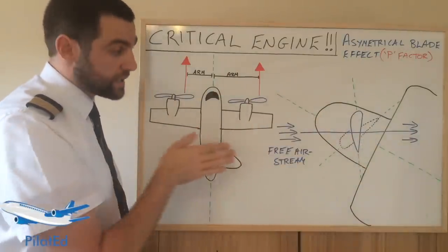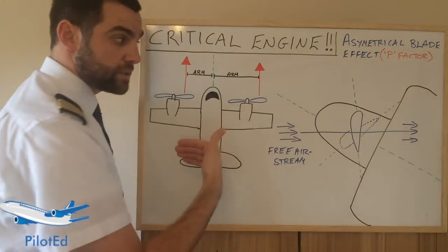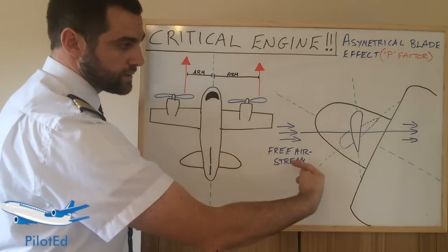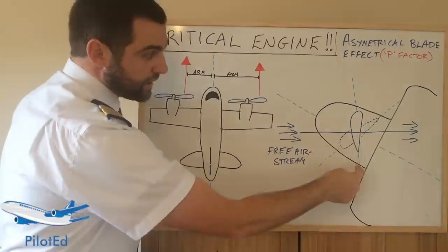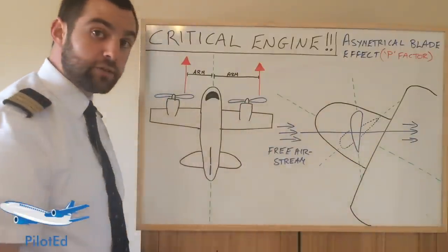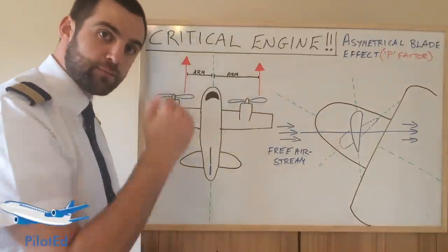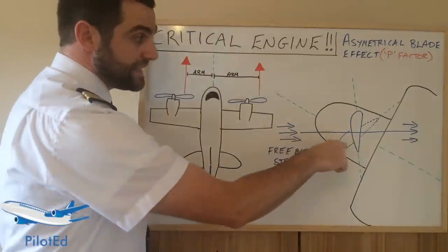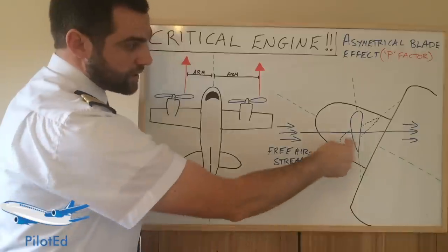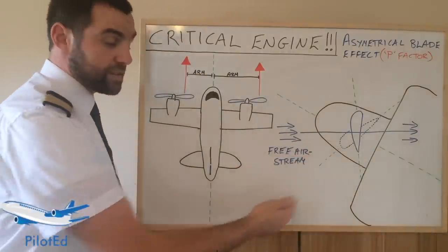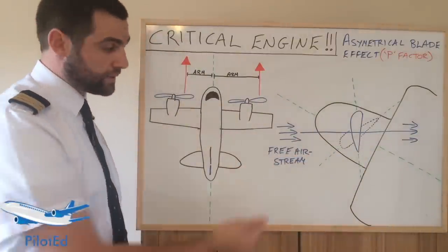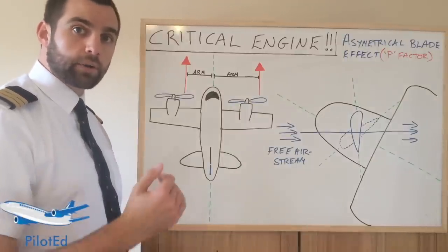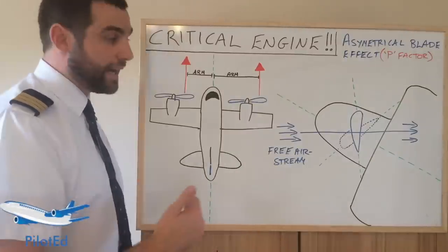We have two propellers mounted and we have the free airstream, which is essentially in the opposite direction to where we're travelling. This would be rotating down — clockwise. The up-going blade cuts the free airstream almost at 90 degrees, so it has a very small angle of attack and cuts a very small portion of the air. As we have that angle of attack of the aircraft — as the nose is pitched up — the down-going blade cuts a much larger section of the free-flowing air. So it essentially has a larger angle of attack, generating more lift and hence more thrust.